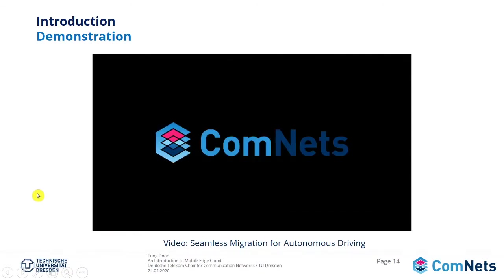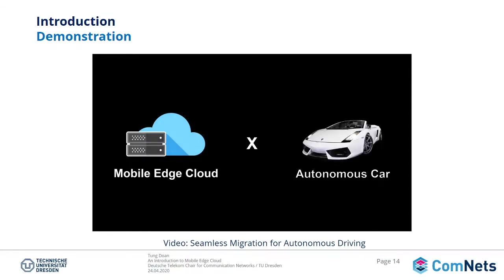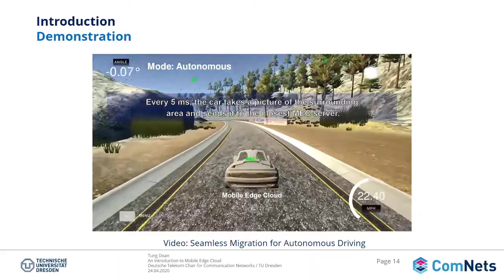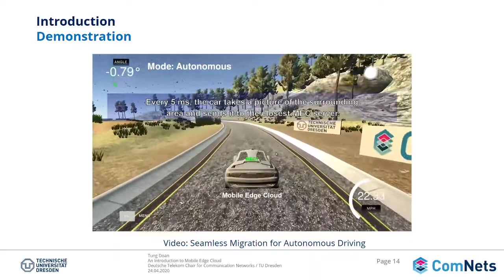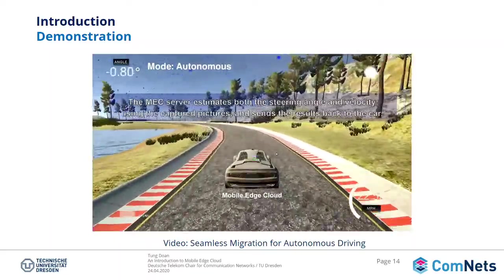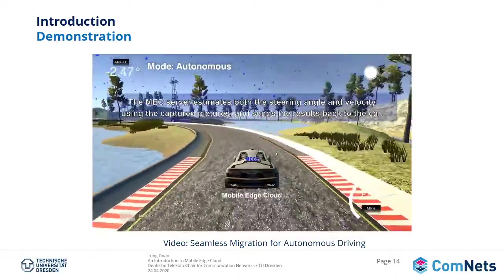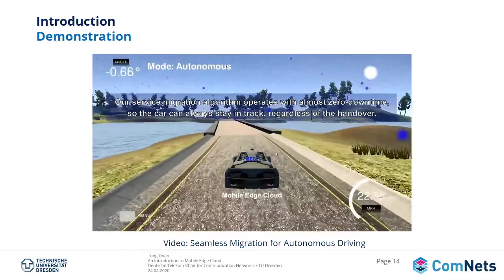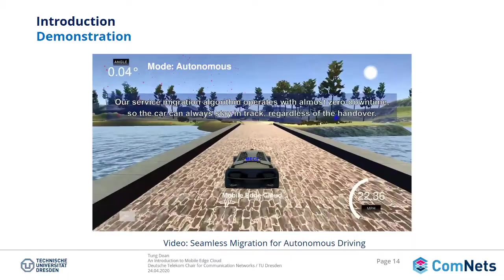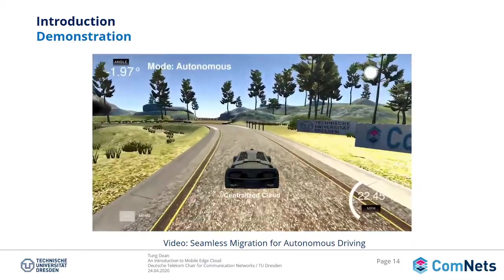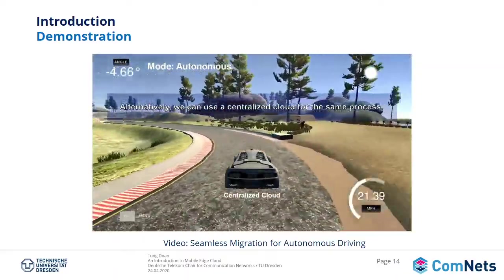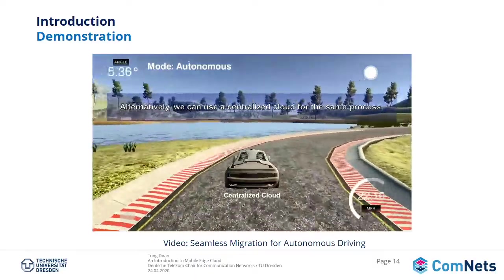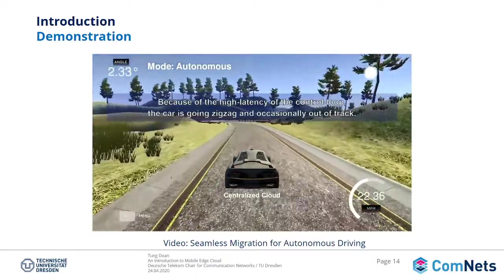To highlight the impact of mobile cloud computing versus mobile edge computing, I would like to show an example. This video shows the impact of mobile edge cloud for autonomous driving. Autonomous driving is very critical with regard to latency because in this case the steering angle of the car is computed in the mobile edge cloud, creating a control loop between the car and the mobile edge cloud. With mobile edge cloud, the car can keep to the center of the track — it is very stable. But with mobile cloud computing, because of the long distance, the latency is critical and sometimes the car goes left, sometimes right, which is really dangerous.